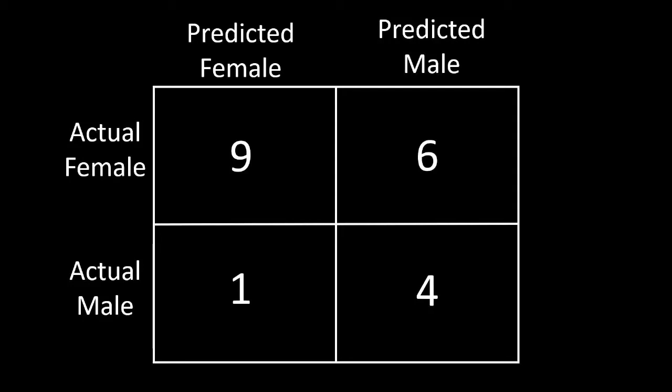Before we get to the code, I'm going to briefly explain how the results from the model prediction are commonly shown. The most common way is through a confusion matrix, which you see on the screen.